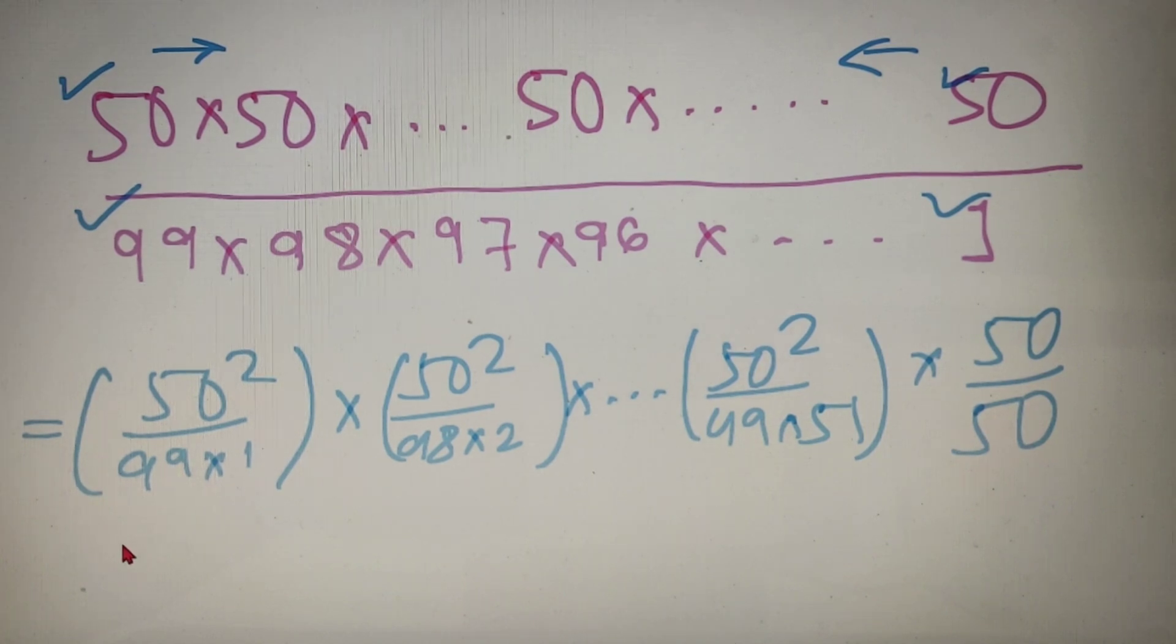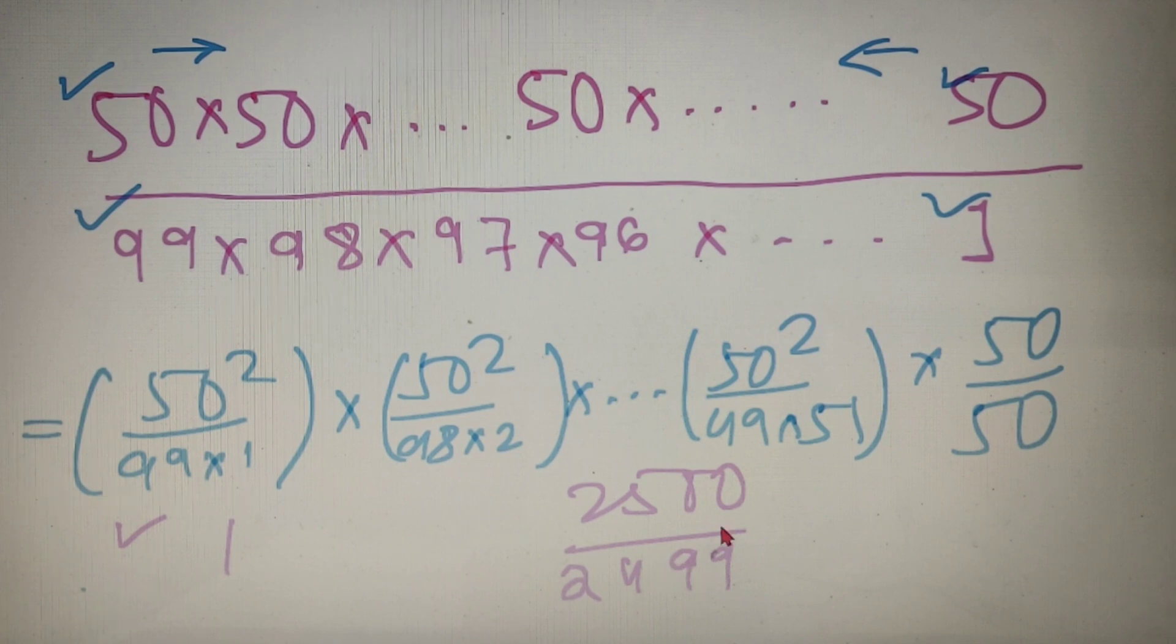Now over here you can clearly see that the first term, 50 square by 99 into 1, is greater than 1. The second number, 50 square by 98 into 2, is also greater than 1. And the last number, 50 square divided by 49 into 51, is nothing but 2500 divided by 2499, and this number is also greater than 1. And the last number is indeed 1. So all these numbers are greater than 1 and the last number is 1, so product of all these numbers will definitely be greater than 1. So I can say that 50 to the power 99 is greater than 99 factorial.